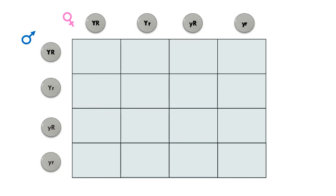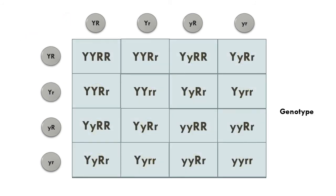The next step in solving a dihybrid cross is to make a Punnett square, this time made of 16 squares. Since 4 gametes of maternal origin and 4 gametes of paternal origin could possibly participate during fertilization, we take into account all possible genetic combinations. After dividing the table into 16 squares, place the gametes along the left and top sides of the grid. Pause this video and try to determine the genotype for each square.